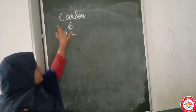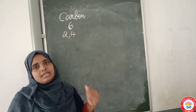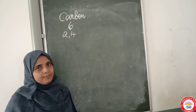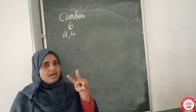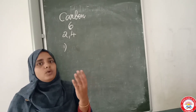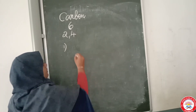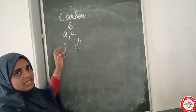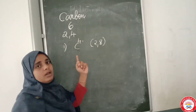So how will carbon attain its noble gas configuration? Its electronic configuration is 2, 4. To have 8 electrons in the outer shell — a noble gas configuration — two possibilities exist. The first one: it could gain 4 electrons and become C⁴⁻. That means if it gains 4 electrons, it becomes 2, 8, which is C⁴⁻.